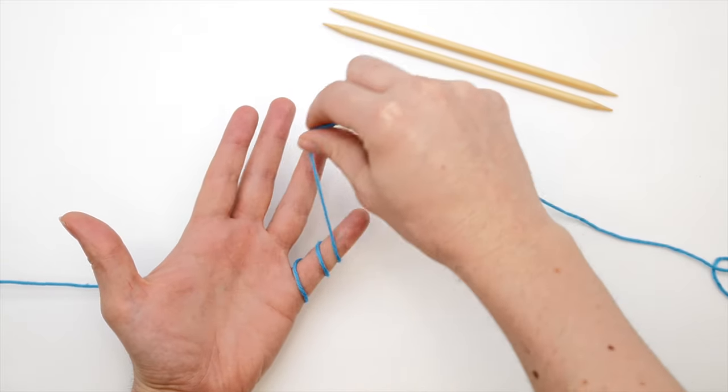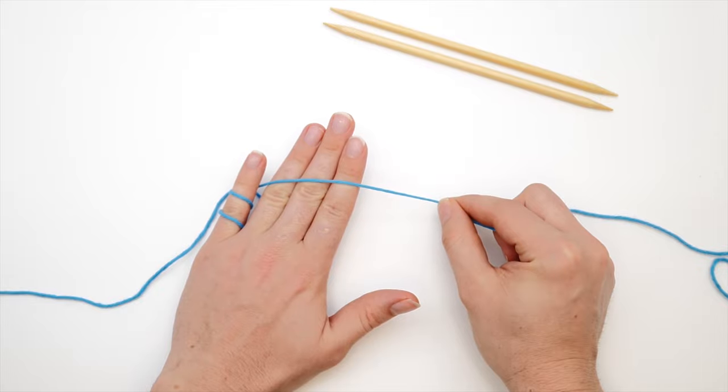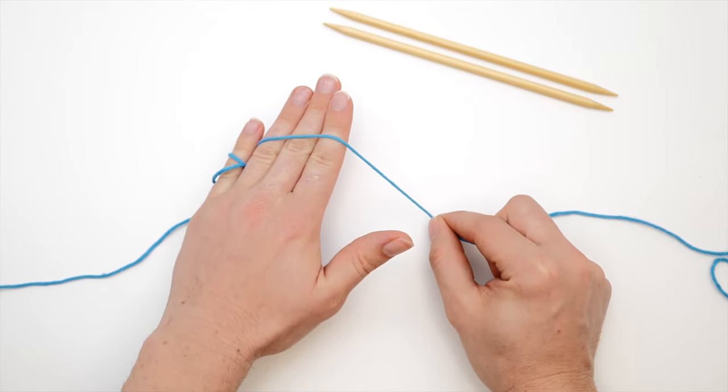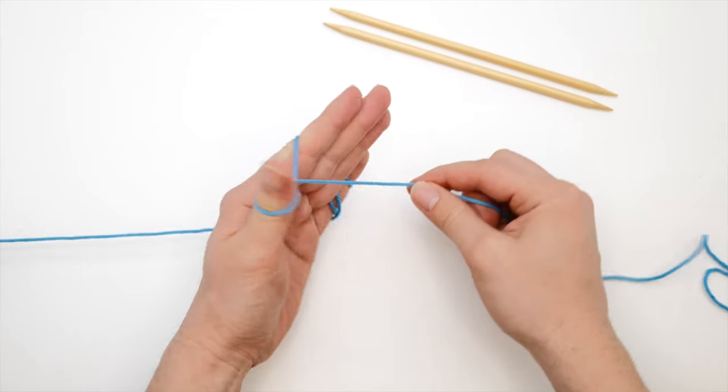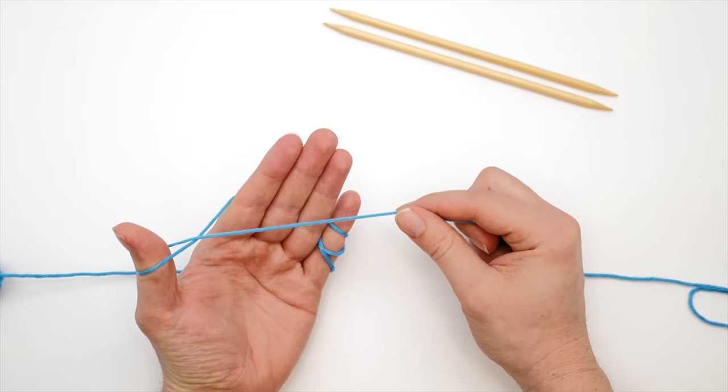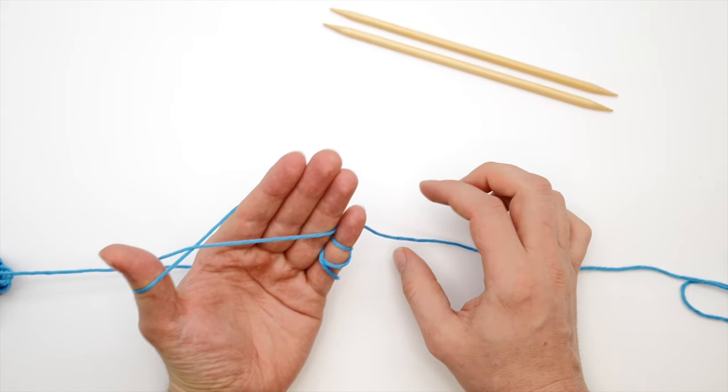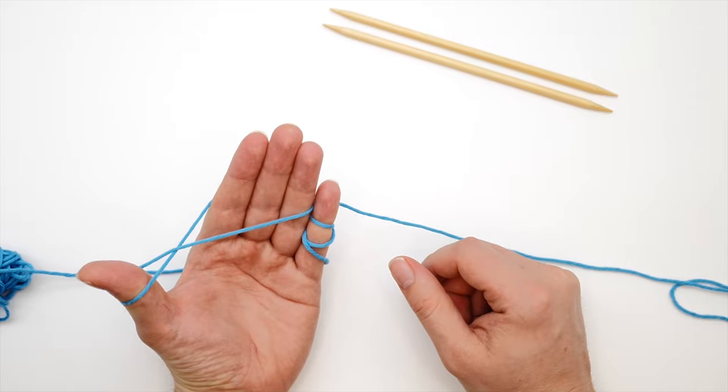From here, you have to bring the yarn across the back of your hand like this and wrap it around your thumb once clockwise like this. Now you have to secure the yarn between your ring and your pinky finger like this and it should look like this.